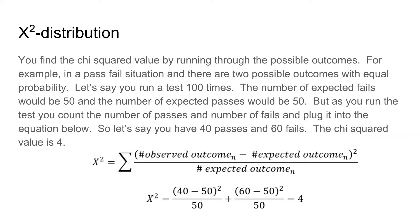The chi-squared value can be found with the equation below, where you take the difference between an observed outcome and the expected outcome, square that value, and divide it by the expected outcome.